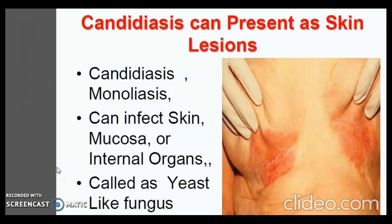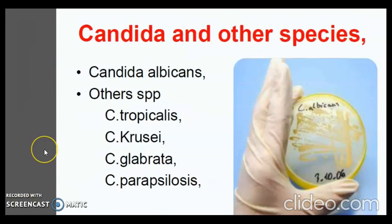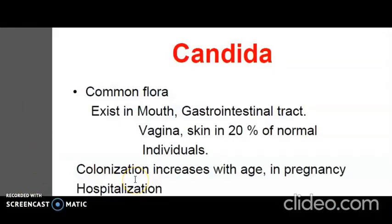Another kind of superficial cutaneous infection is caused by Candida. Candidosis or candidiasis is an infection of the skin, mucosa, and rarely of the internal organs, caused by the yeast-like fungus Candida albicans. Besides C. albicans, other species include Candida tropicalis, C. krusei, C. glabrata, and C. parapsilosis. Candida is normal flora existing in the mouth, gastrointestinal tract, vagina, and skin in about 20% of normal individuals, and colonization increases with age, pregnancy and hospitalization.